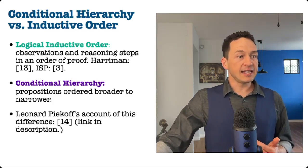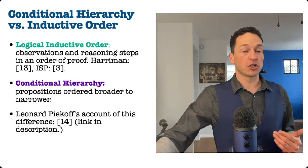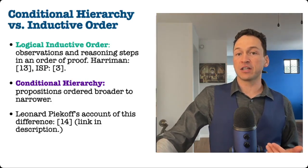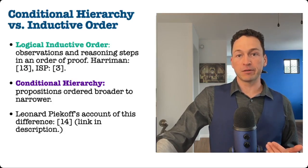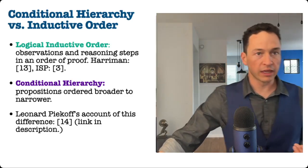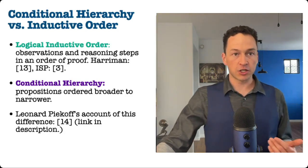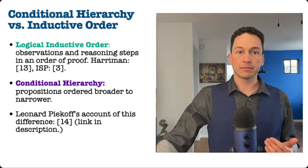Such hierarchies must be thought of as separate from inductive orderings. A logical inductive order — such as my inductive summary of physics, or to give another example, David Harriman's Fundamentals of Physical Science (link in the description) — these logical orders present ideas in an order that they can be proven from observation, each idea resting on earlier ideas for their proof. In contrast, a conditional hierarchy presents ideas in an order of broader to narrower, showing how broader principles of a field condition or play a role in the identity of the narrower propositions of a field. And in citation 14 of the video description, I've included a link to part of a lecture where Leonard Peikoff explains the difference between inductive order and the order of OPAR.